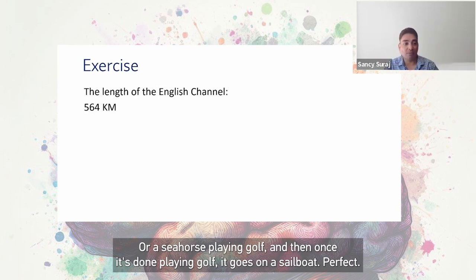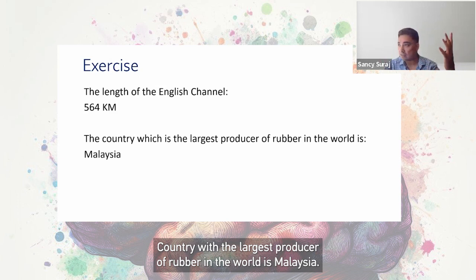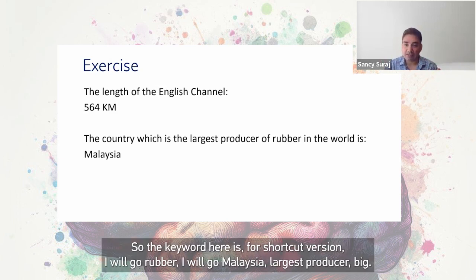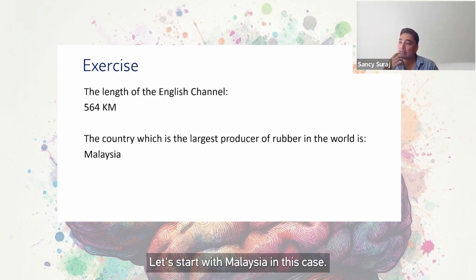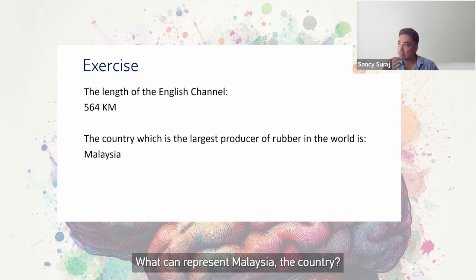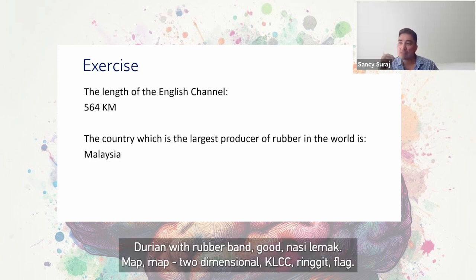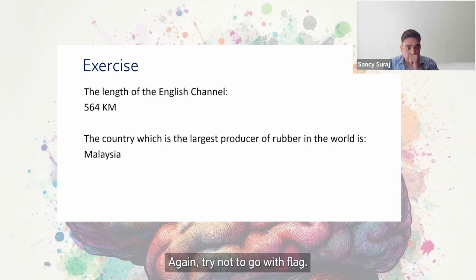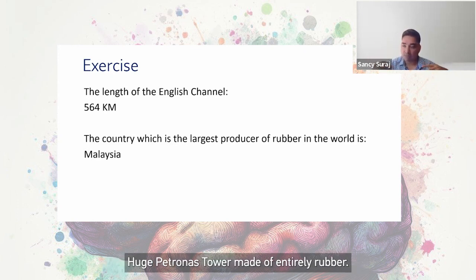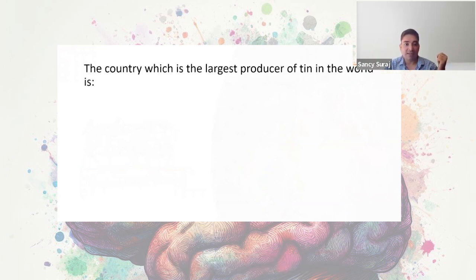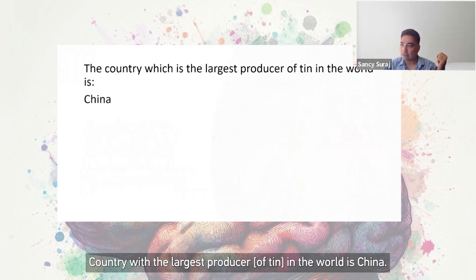Next example: the country with the largest producer of rubber in the world is Malaysia. For the shortcut version, keywords are rubber and Malaysia. What can represent Malaysia? Durian with a rubber band, a llama, KLCC — I like the KLCC, the huge Petronas Tower made entirely of rubber. Link created.